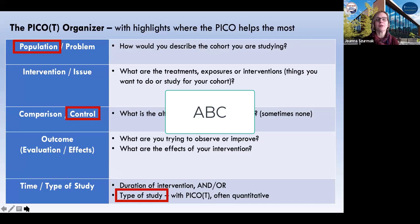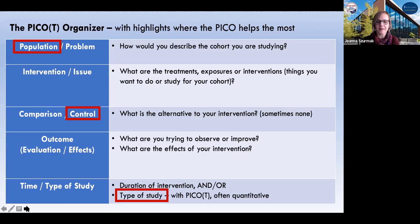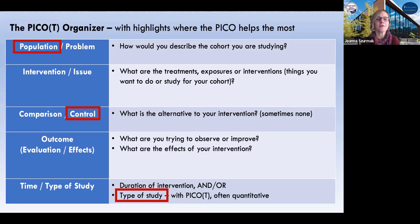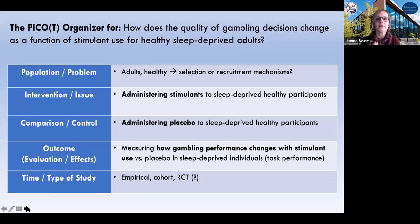Once we've split up these parts of a question into a simple organizer, we can use an organizer that helps us with research decision-making. These are incredibly common in healthcare research — the PICO or PCOAT organizer is extremely common. The main thing about the PICO organizer is it reminds you to ensure you've got a population, think about the control, and think about the type of study. For our question: the population is healthy adults, we still need to know more about selection and recruitment. The intervention is administering stimulants. The control is the group that gets the placebo — both healthy, sleep-deprived participants. The outcome is how performance on the gambling tasks, as measured by one of the inventories, changes with stimulant versus placebo.